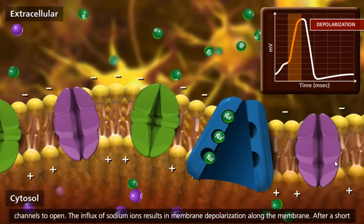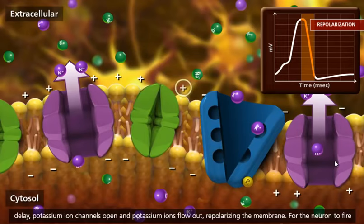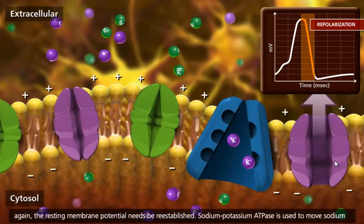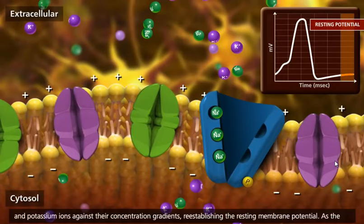After a short delay, potassium ion channels open and potassium ions flow out, repolarizing the membrane. For the neuron to fire again, the resting membrane potential needs to be reestablished. Sodium-potassium ATPase is used to move sodium and potassium ions against their concentration gradients, reestablishing the resting membrane potential.